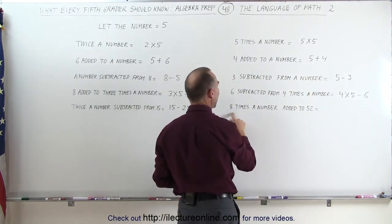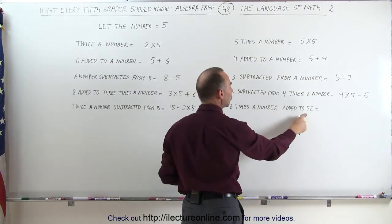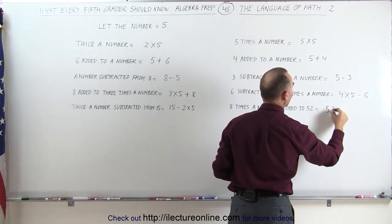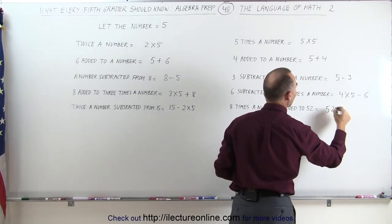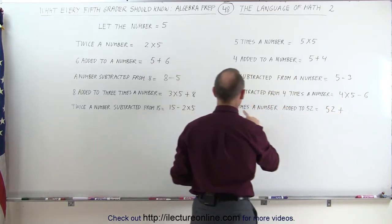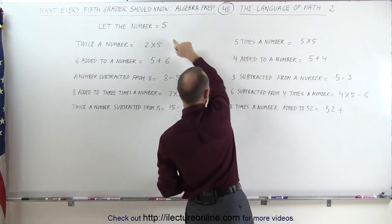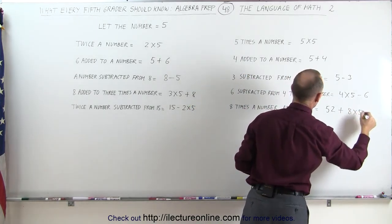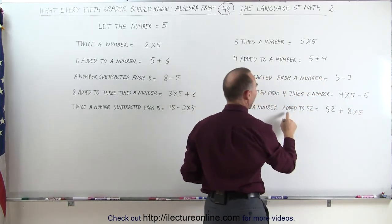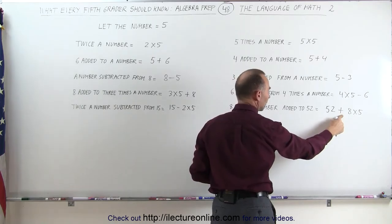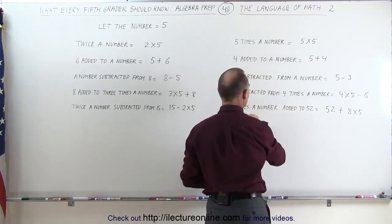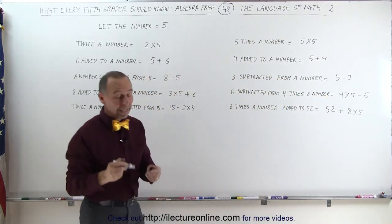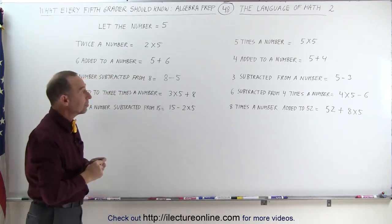And finally, 8 times the number added to 52. We write the number 52, and then we add to that 8 times the number — if the number is 5, 8 times 5 — added to 52. That's how we write that.